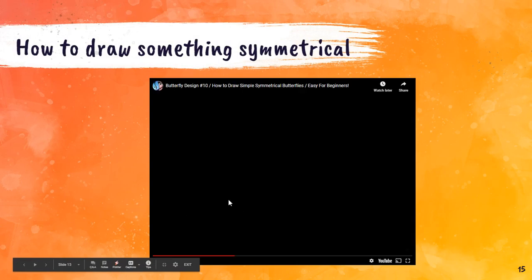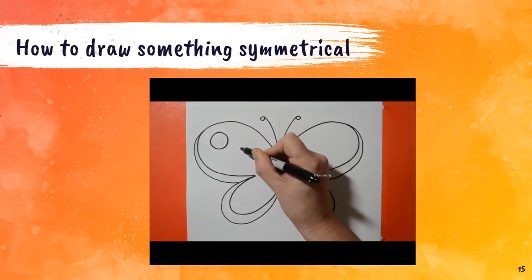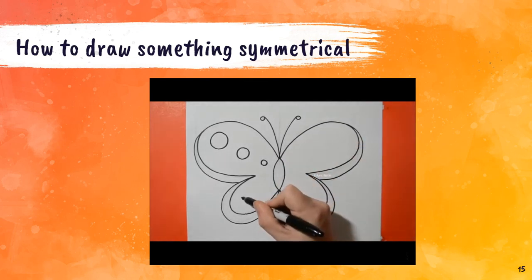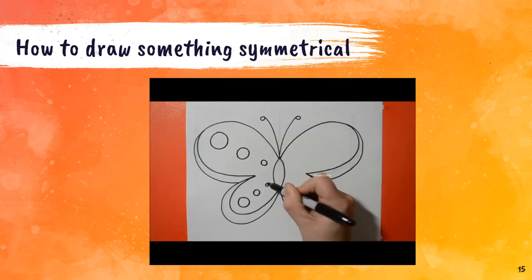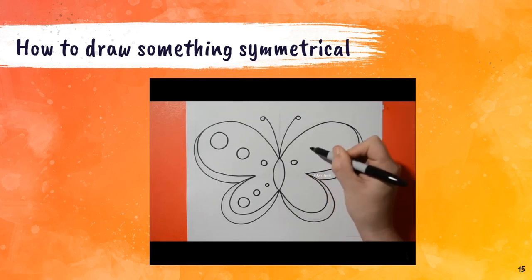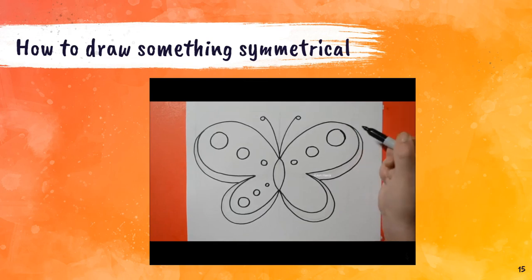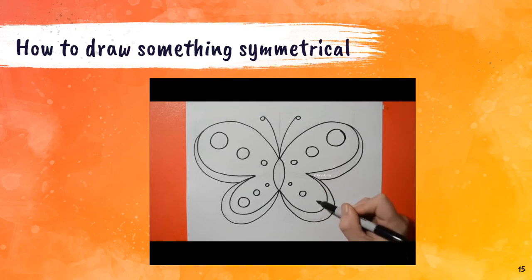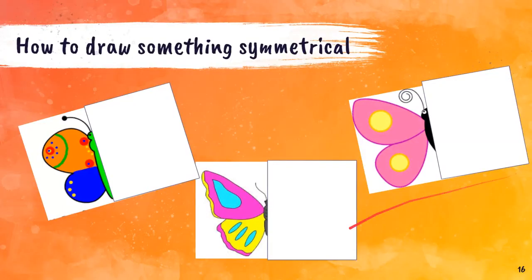For your assignment today, you are going to be drawing in the designs of a butterfly that are symmetrical. So you're going to look at this video and what you want to see is how the person drawing this is doing a design on one side. You can see here that she has first drawn three circles on the top and the bottom. And now on the other wing, she has to do the same thing, because that's what symmetrical means — it's the same on both sides. So she's got to do the three dots on the top and the three dots on the bottom, just like she did for the other side, because that's what symmetry is.